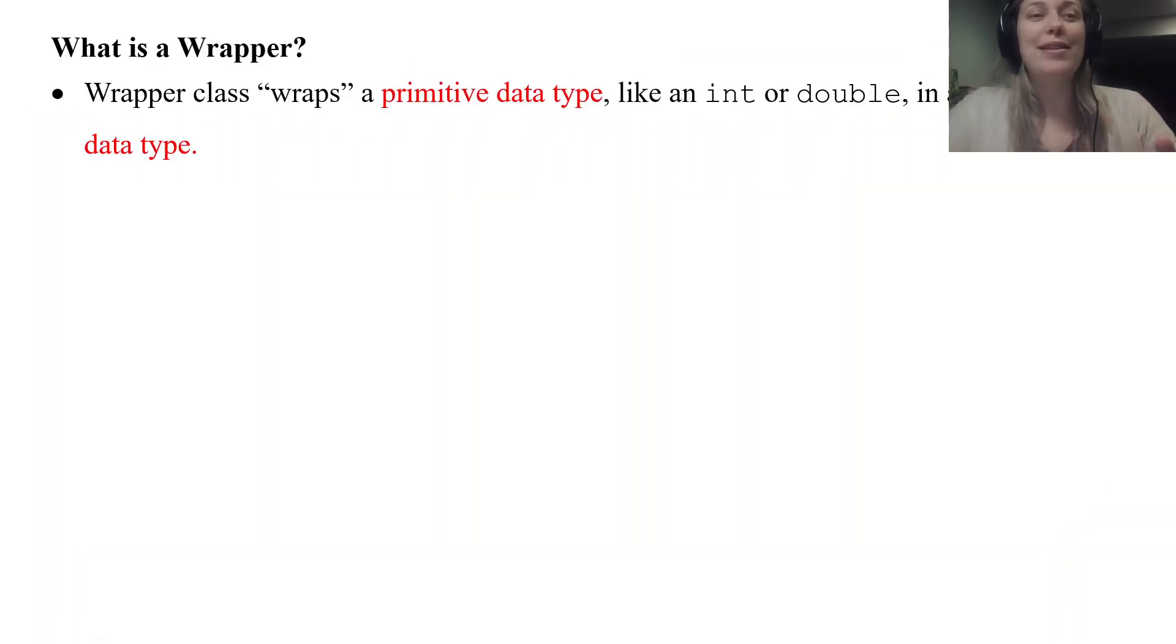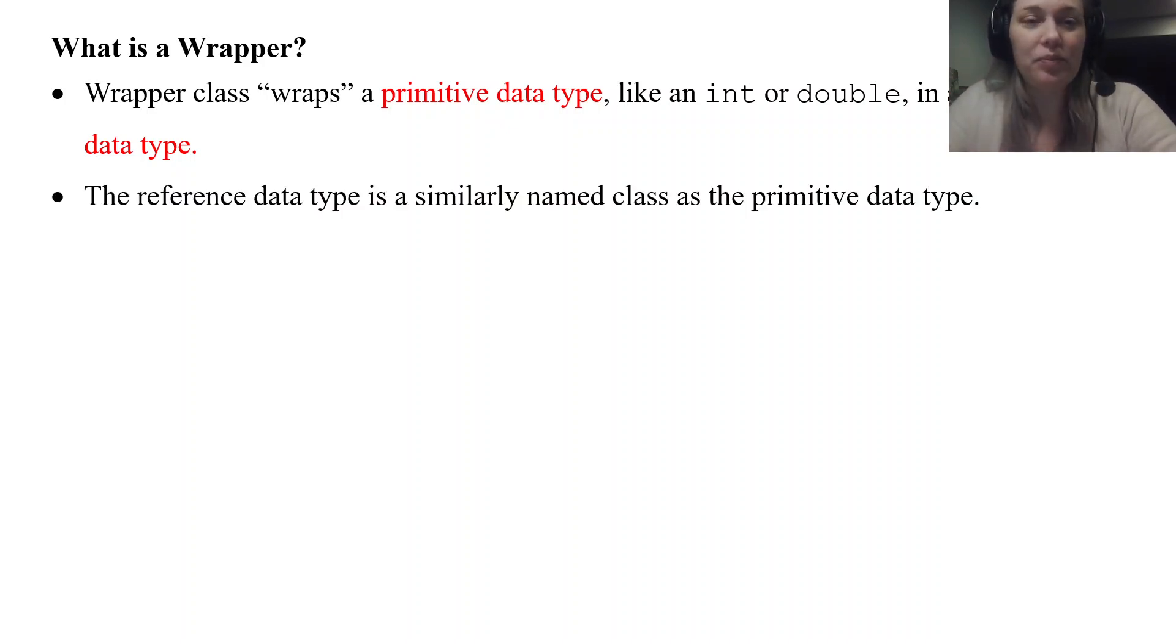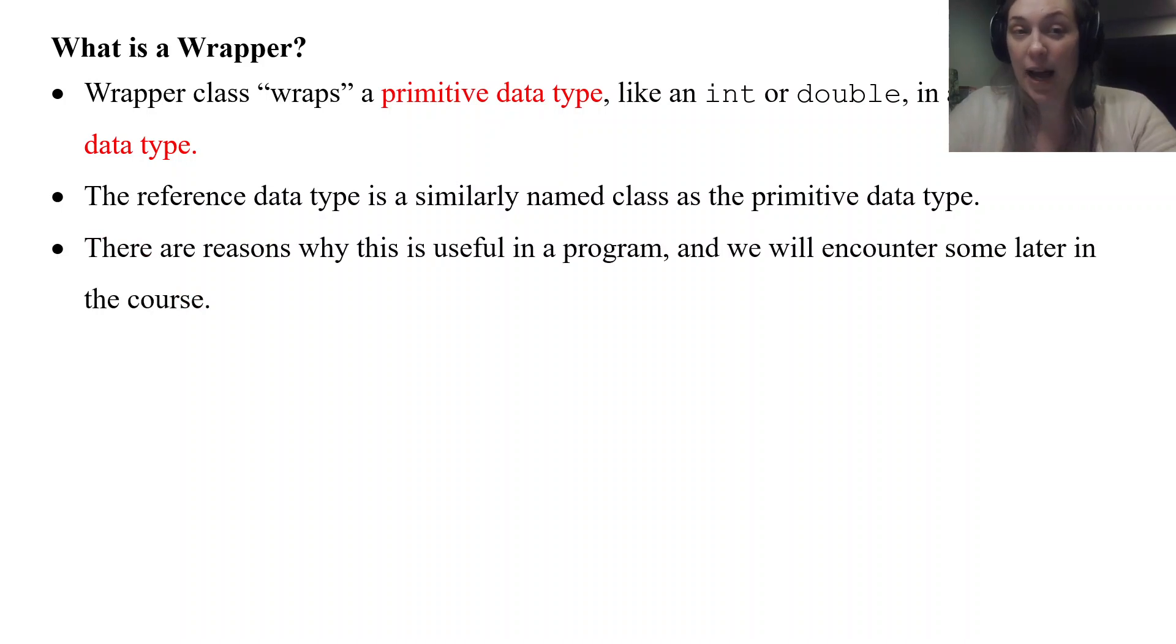So first off, what is a wrapper? Well, a wrapper class wraps a primitive data type like an int or a double into basically a reference data type. So it's a way to work with primitive data types like if you want to use an integer or a decimal but make them into objects. The reference data type is a similarly named primitive data type, the only difference is that it's capitalized.